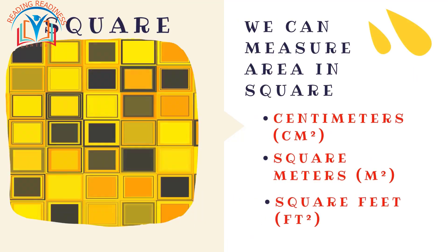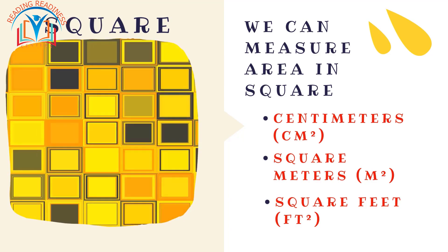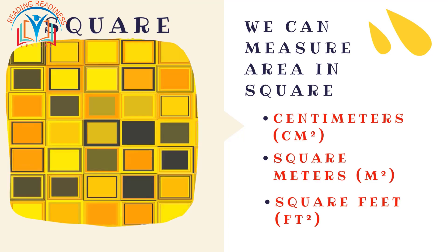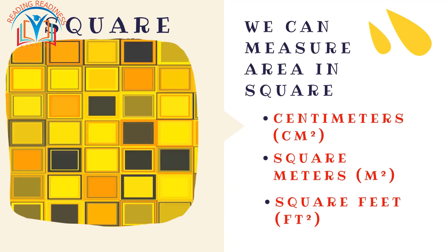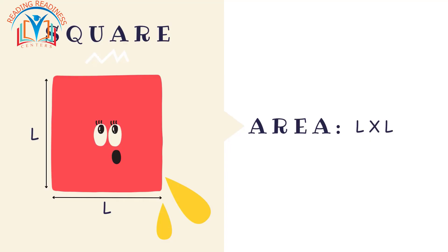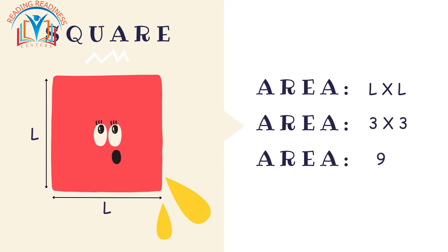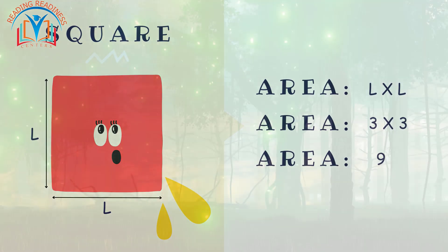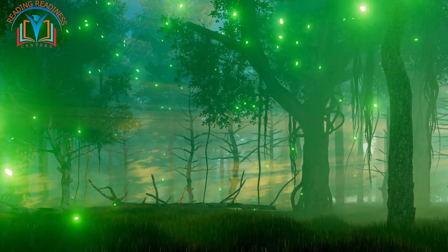We can measure area in square centimeters (cm²), square meters (m²), or square feet (ft²), depending on the size of the shape we are measuring. To find the area of a square, you simply multiply the length of one side by itself. If each side is three units long, the area is three times three, which equals nine square units.